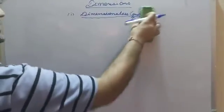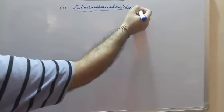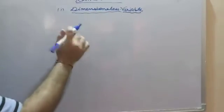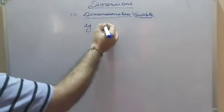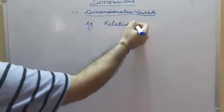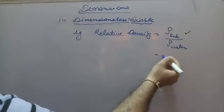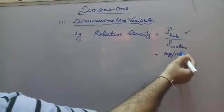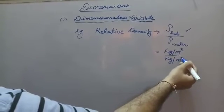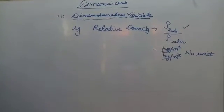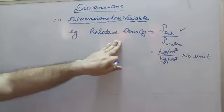The fourth type is dimensionless variable — a quantity which has some value but is dimensionless. For example, relative density, which is the density of a substance divided by the density of water. Since it is kg/kg, the units cancel out, making it dimensionless, but its value is variable.